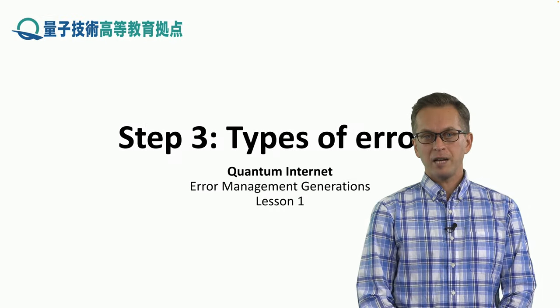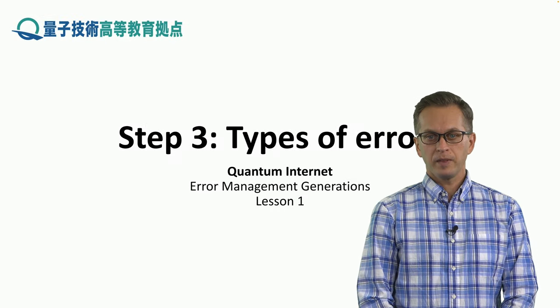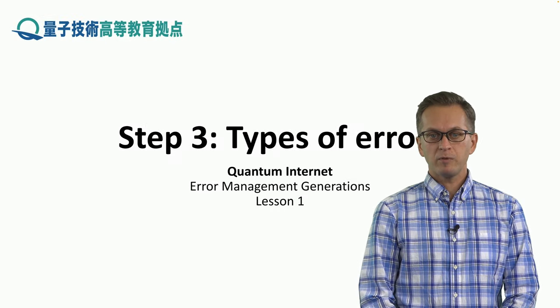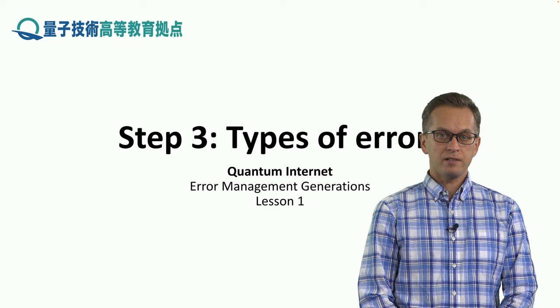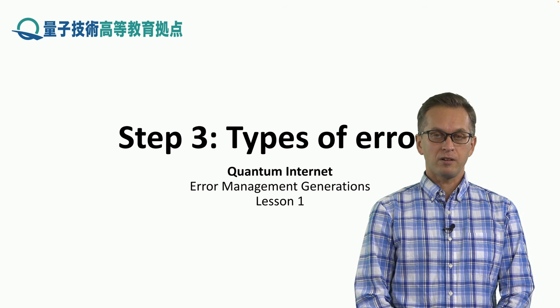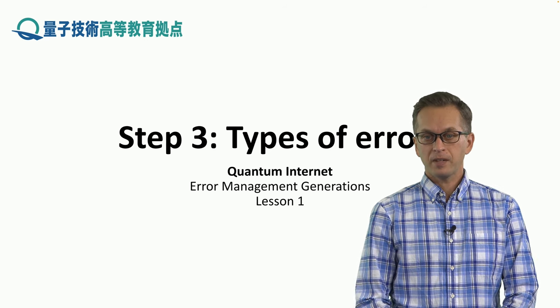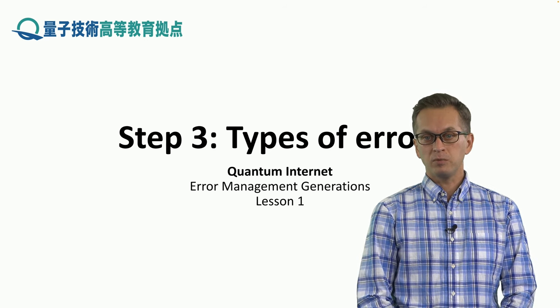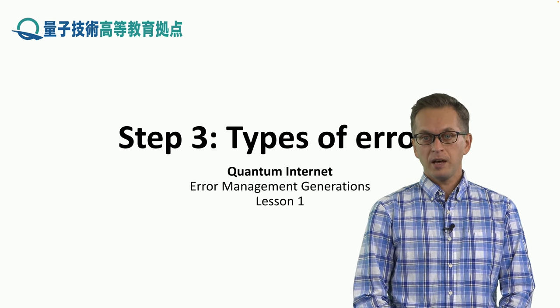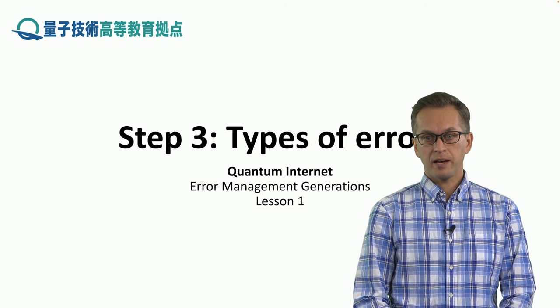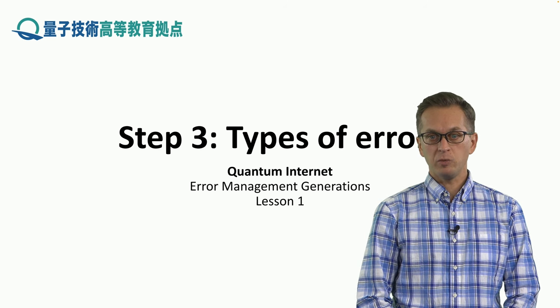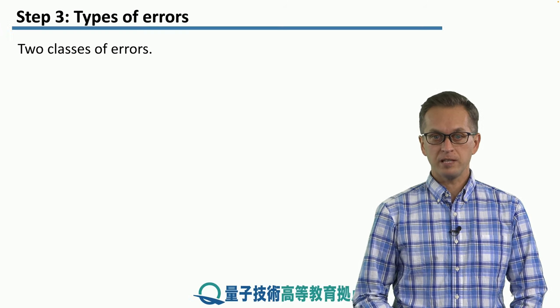Step 3: types of errors. In this step we will look at the various errors that can occur in quantum networks, how to describe them, and what effect they have on our qubits. So let's begin.